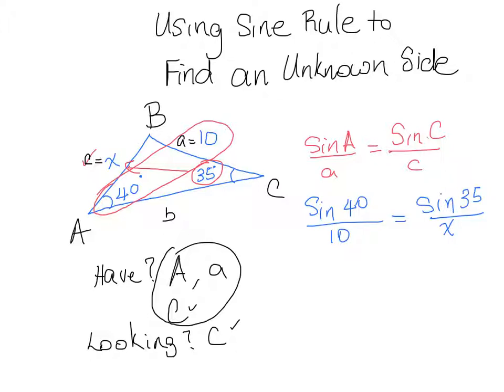We have two fractions that are equal to each other, and we're looking for an unknown, so that means we can cross-multiply. On the left side, I have x times sine 40 is equal to, on the right side, 10 times sine 35. Now, at any point you can simplify this, but I like to see everything as accurate as possible, so I'm not going to simplify anything until the very end.